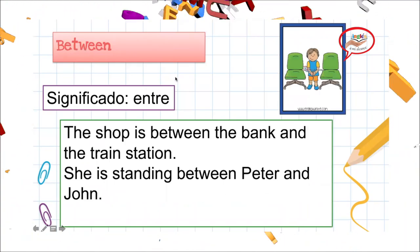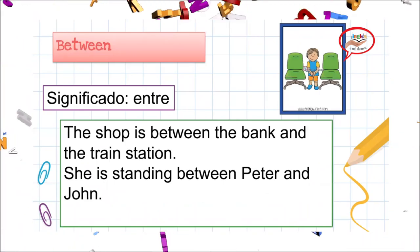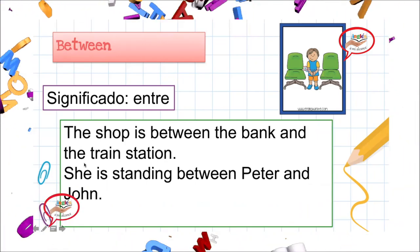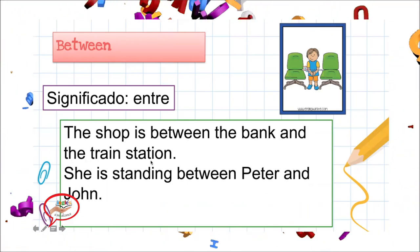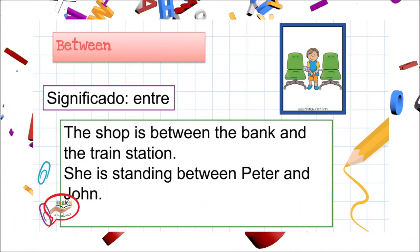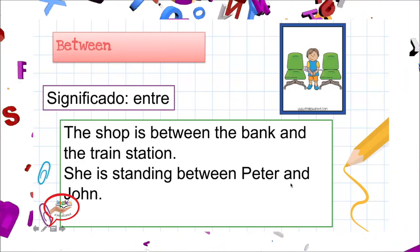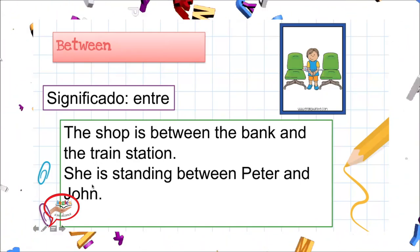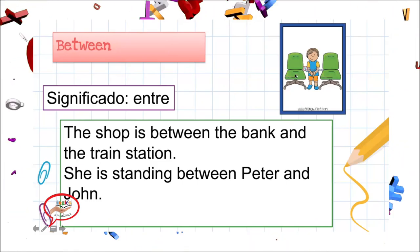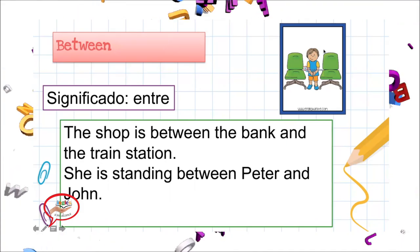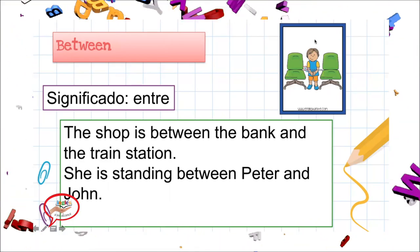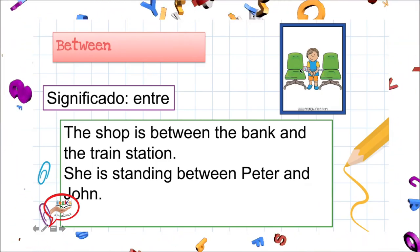Next one: 'between'. El significado de esta palabra es 'entre'. Let's see the example: 'The shop is between the bank and the train station' — la tienda está entre el banco y la estación de trenes. 'She is standing between Peter and John' — ella está parada entre Peter y John. Como pueden ver en la imagen, the boy is between the chairs — el niño está entre las sillas.